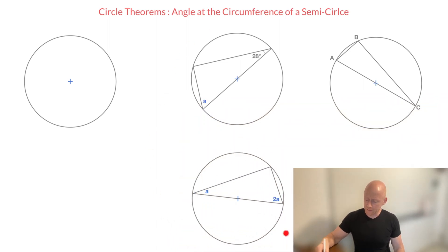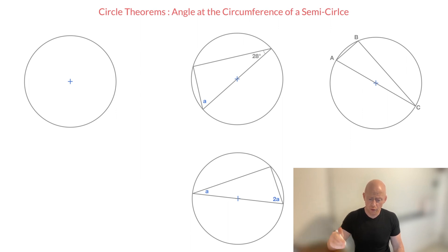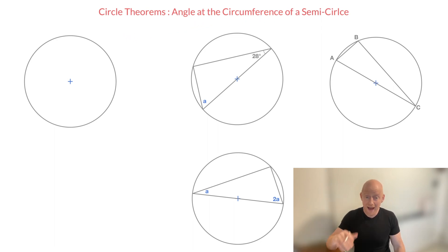On the right-hand side of the screen here, you can see that I've added three circles, and these all correspond to examples that I'm going to work through in just a minute. First of all though, let me use the circle on the left-hand side to illustrate what this rule or what this theorem is actually saying.